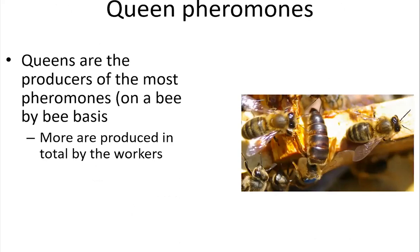Queen pheromones have been studied for the longest — very rigorously since the 1960s. But because queen pheromones are harder to understand and more complex than nest mate recognition pheromones, reproductive signaling is probably less well understood even though there's more work on it. The queen is producing the most pheromone signal of all bees in the nest on a per-bee basis. She has the most signaling to do: telling the hive that they have a queen, a healthy queen, a queen moving around the way she's supposed to.